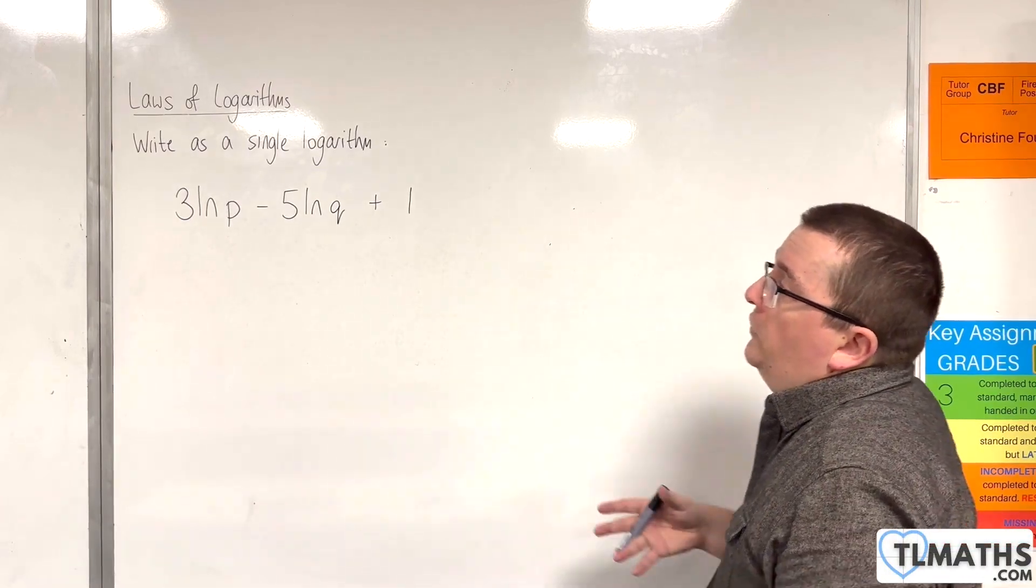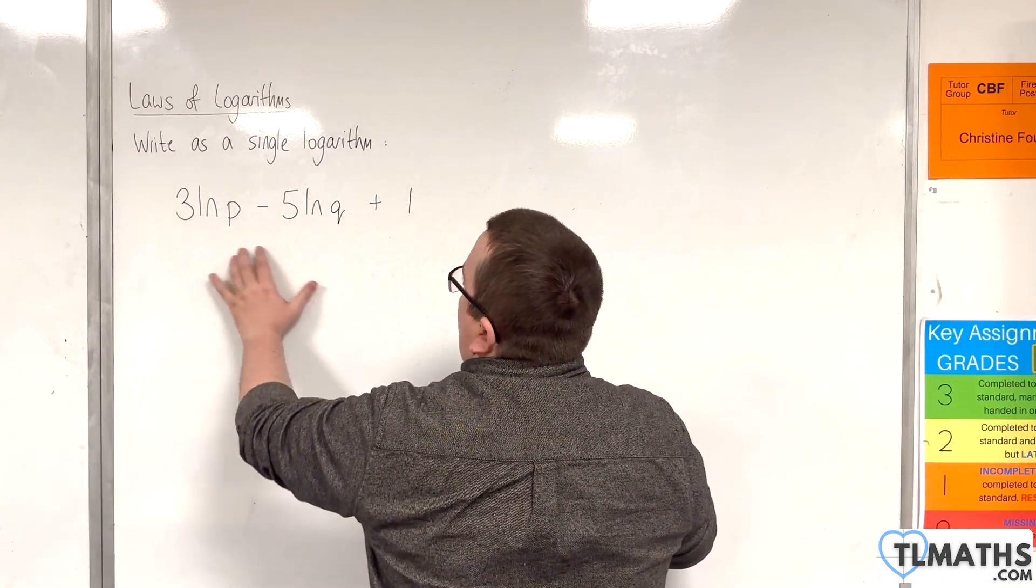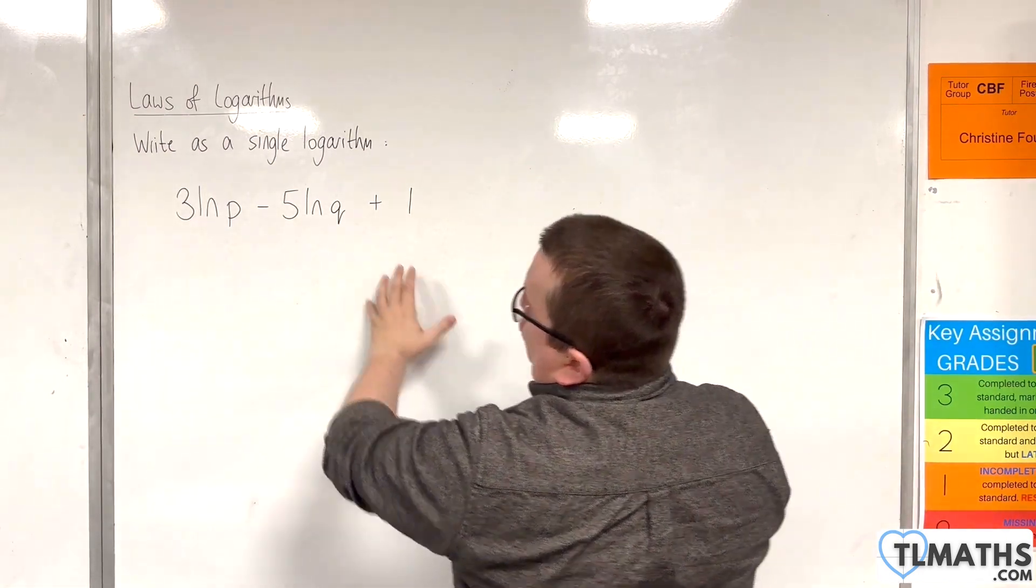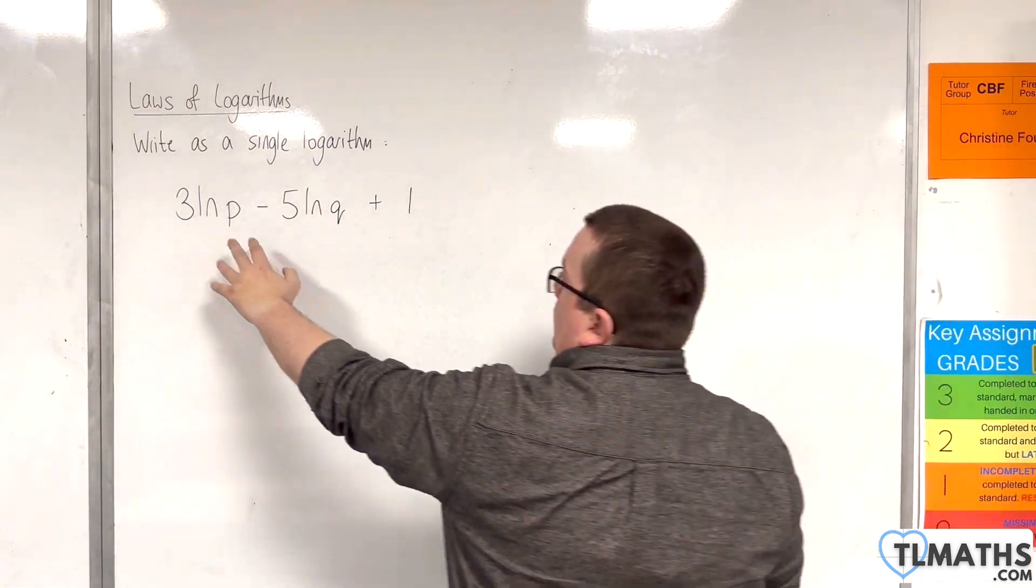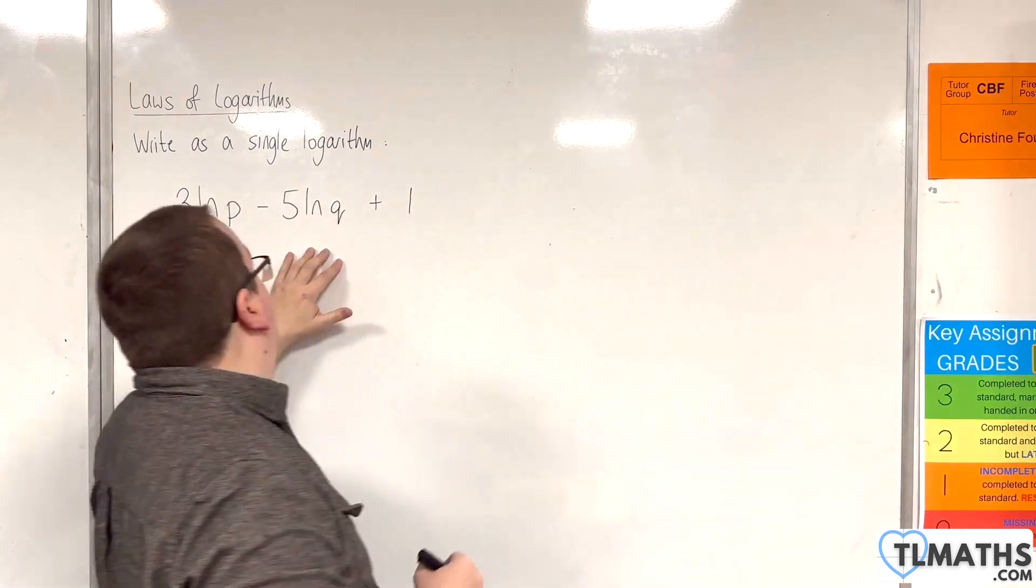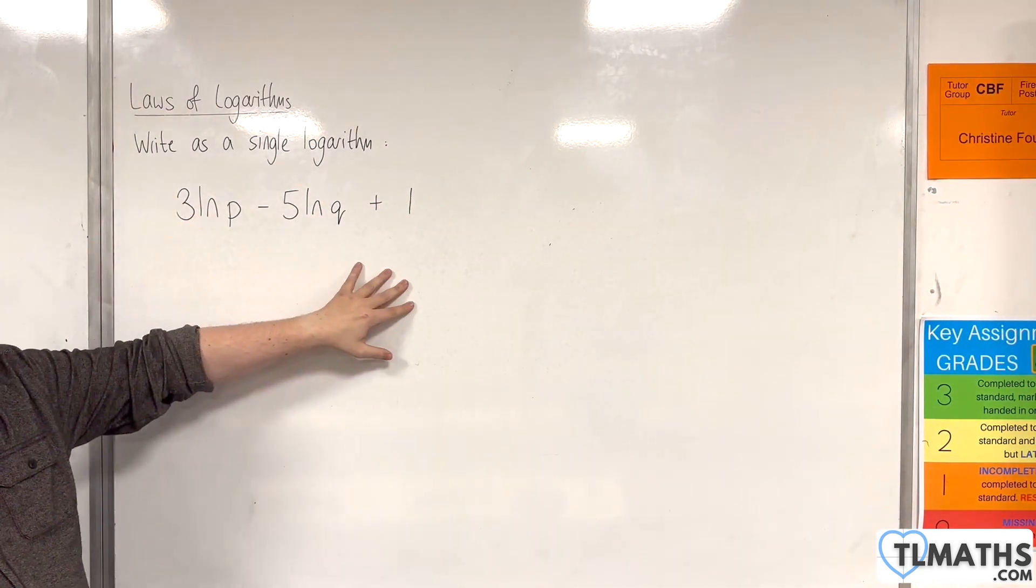So in this video I want to go through an example where we're going to write this expression as a single logarithm. We have 3 times the natural log of p, take away 5 times the natural log of q, plus 1.